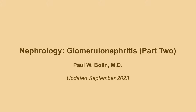Okay everybody, we got through part one of the glomerulonephritides and now we are ready to move on to part two. This part is going to be a little bit shorter. In part one we talked about glomerulonephritides associated with systemic signs — things like GPA, eGPA (which I still miss calling Wegener's), and Churg-Strauss. Now we're going to be talking about diseases that only affect the kidneys.